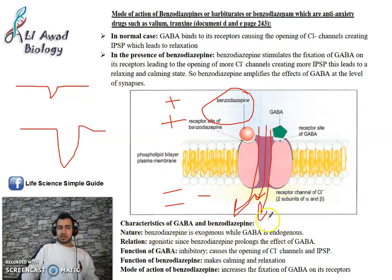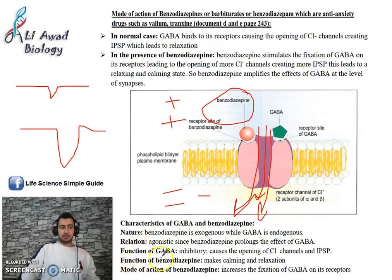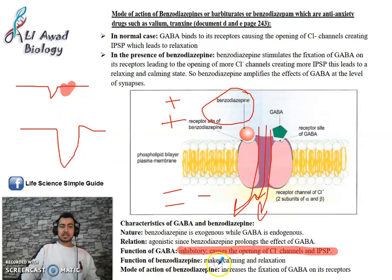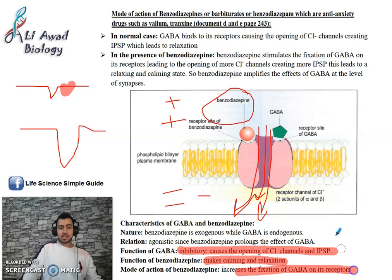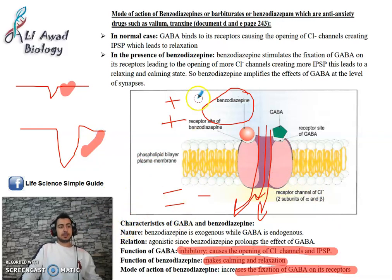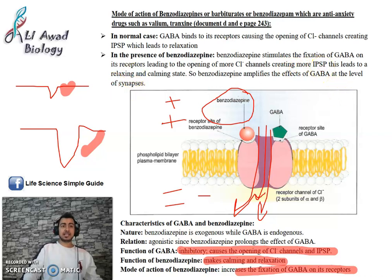Benzodiazepine is exogenous; GABA is endogenous. The function of GABA is inhibitory — it leads to IPSP. The function of benzodiazepine is calming and relaxation — it causes relaxation and sleep. The mode of action: benzodiazepine increases the fixation of GABA to its receptors, leading to the opening of more Cl⁻ channels and more IPSP.